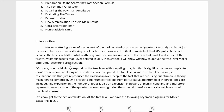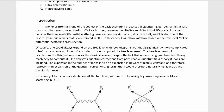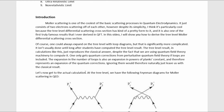I will show you how to derive the tree-level Møller differential scattering cross-section. One could always expand on the tree-level with loop diagrams, but that is significantly more complicated and isn't usually done until long after students have computed the tree-level result. The tree-level result in calculations like this just reproduces the classical answer, despite the fact that we are using quantum field theory machinery. One only gets quantum corrections from perturbative QFT if loops are included, since the loop expansion is also an expansion in powers of Planck's constant.